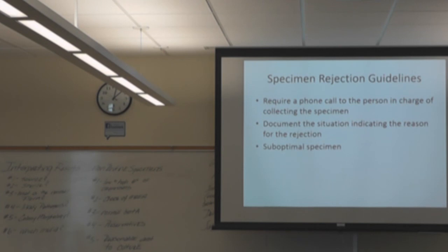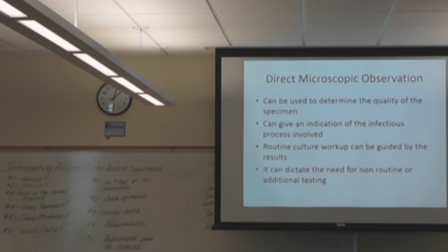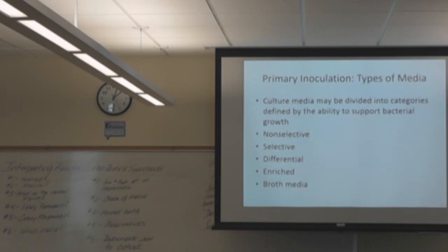After rejection, there's usually a phone call and documentation — it's considered an unacceptable or suboptimal specimen. If it makes it through, we move into direct microscopic observation, which is useful for several reasons. Then we move into primary inoculation, and you'll need to know your types of media — I think we've beaten that topic thoroughly in the first PowerPoint.